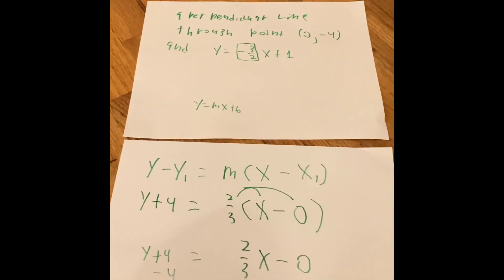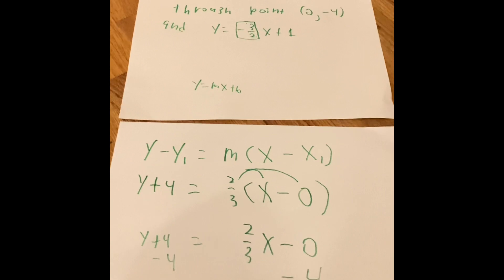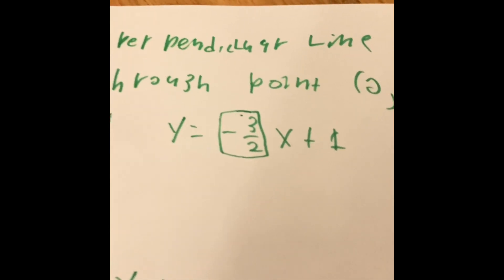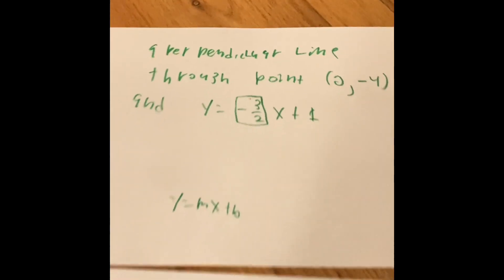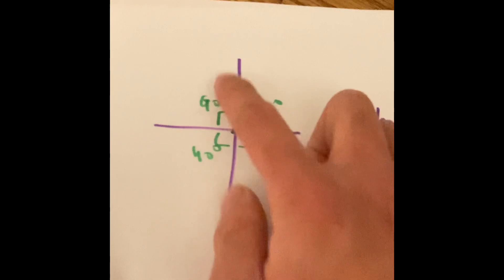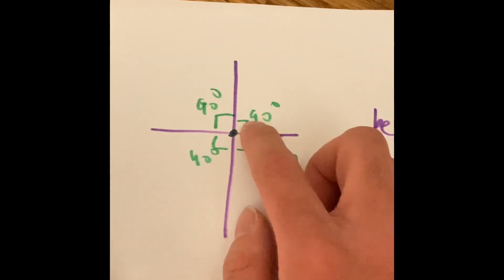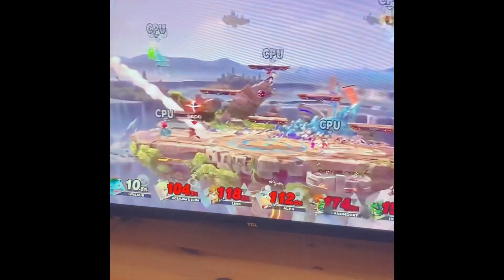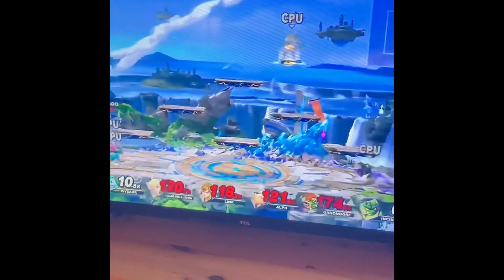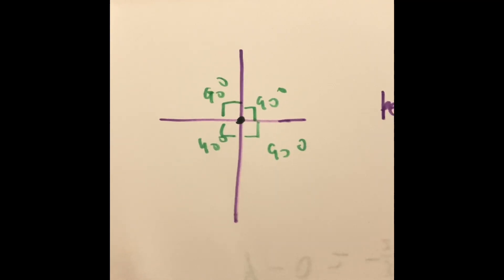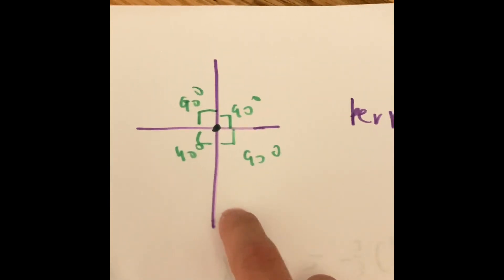The graph proves that our answer works — the line passes through (0, -4) and is perpendicular to y equals negative 3 over 2 x plus 1. As a friendly reminder, perpendicular lines are only perpendicular when the two lines intersect and are 90 degrees from each other, just like a cross. Here's a real-life example of perpendicular lines — the bars of fire.